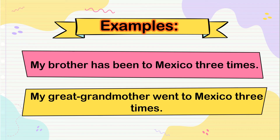'My great grandmother went to Mexico three times.' That is a finished action in someone's life — when the person is dead. So 'my great grandmother went' — that is the past, right? — 'to Mexico three times.'